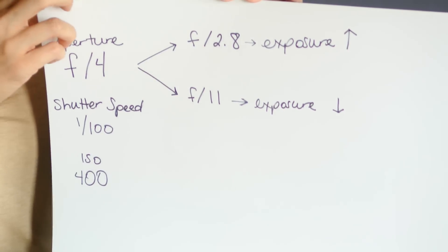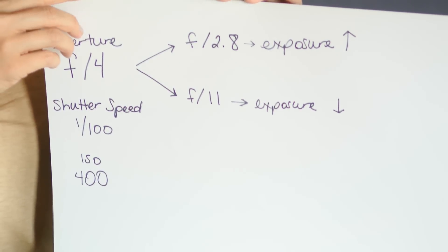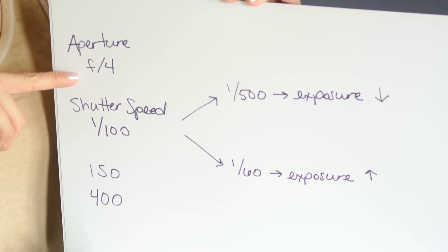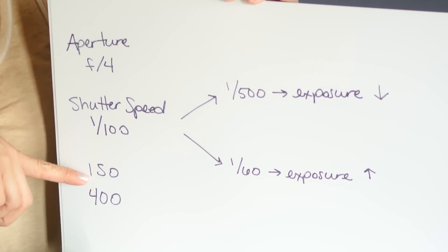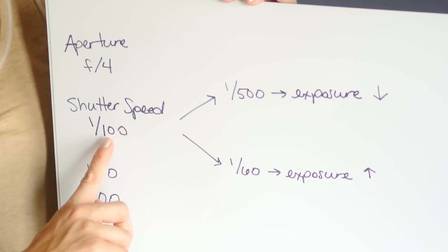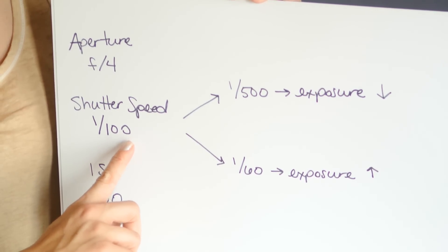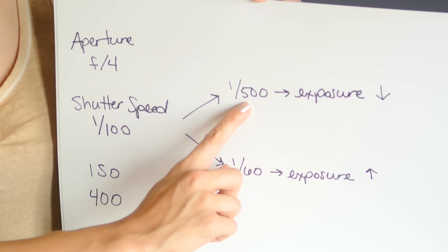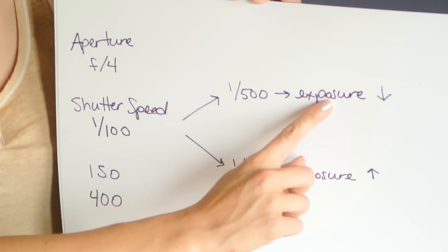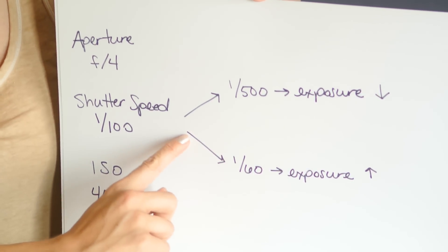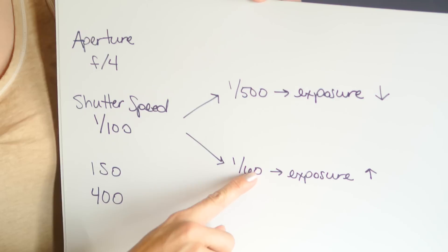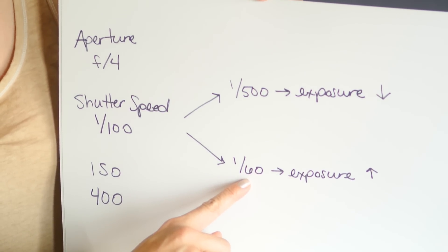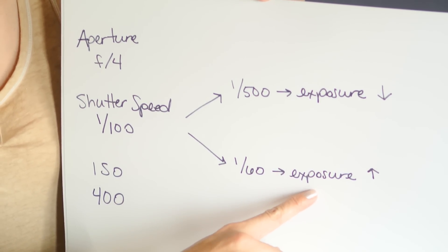Let's talk about shutter speed. Keeping our aperture at f4 and our ISO at 400, let's change the shutter speed. If we speed up the shutter speed to 1/500, not as much light can get in, so our exposure is going to go down. But if we slow our shutter speed, there's going to be more time for the light to get in, so our exposure is going to go up.